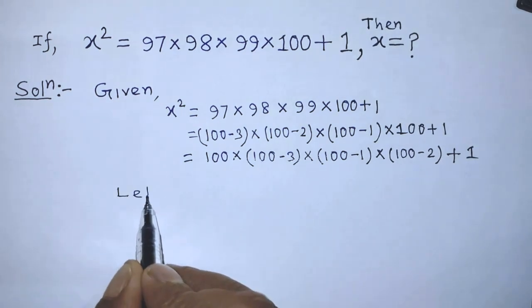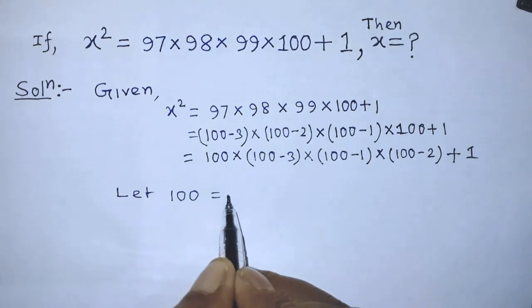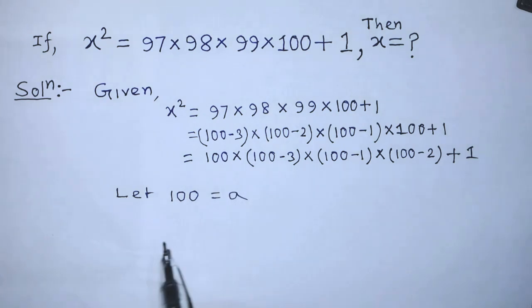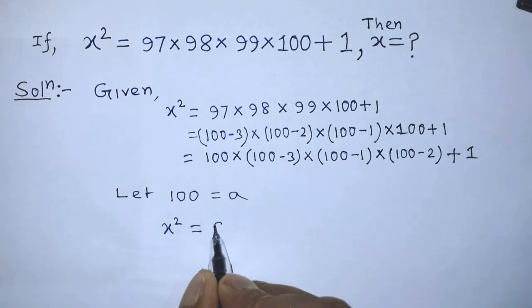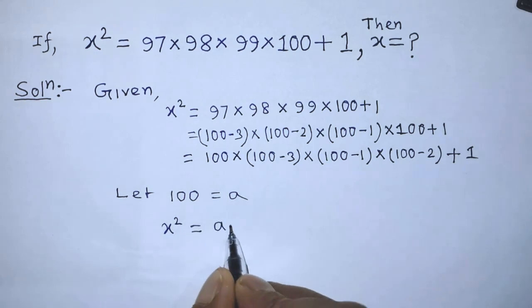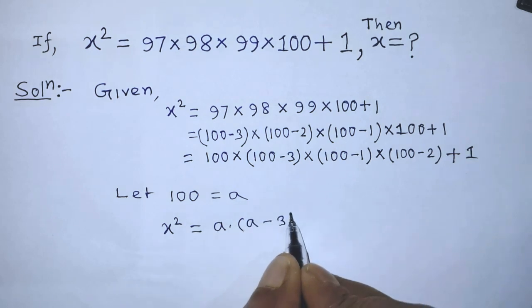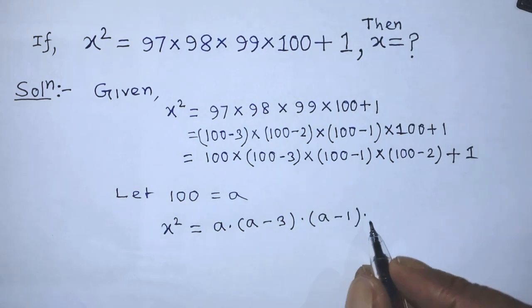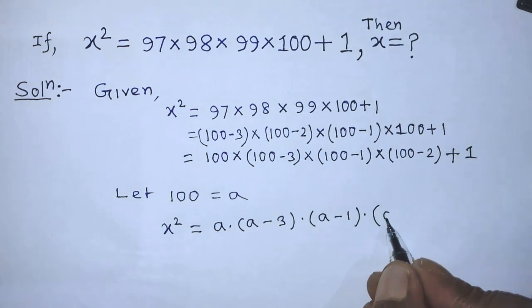Let a = 100. Then the given exponential equation will become: x² = a(a minus 3) times a(a minus 2) plus 1.